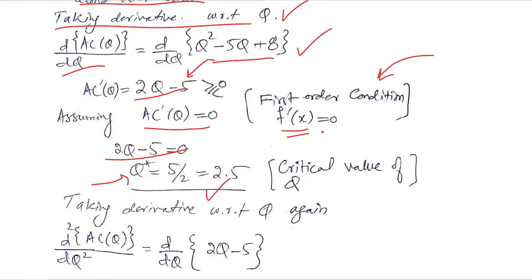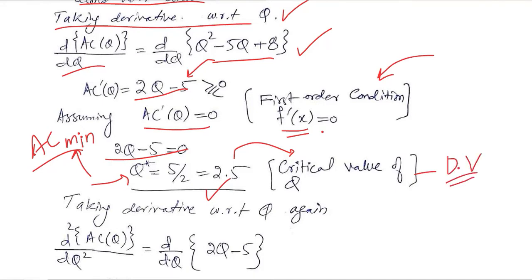Solving this, we find a value of q that helps us achieve the minimum value of average cost. This is the critical value of q, because at the critical value optimization happens. The critical value belongs to the independent variable q, in this case.